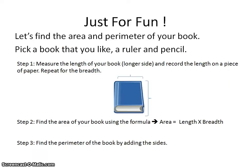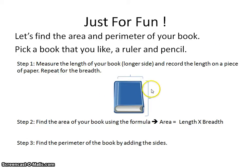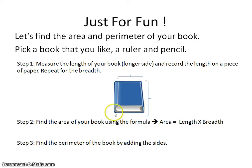Just for fun, let's find the area and perimeter of your book. Pick a book you like and use a ruler and a pencil. Step 1: measure the length of your book, which is the longer side, and record it. Then repeat for the breadth, which is the shorter side. The formula for area is length × breadth. For example, if the length is 15 centimeters and the breadth is 10 centimeters, you use 15 × 10 = 150 centimeters squared. For the perimeter, add all four sides: length + breadth + length + breadth.